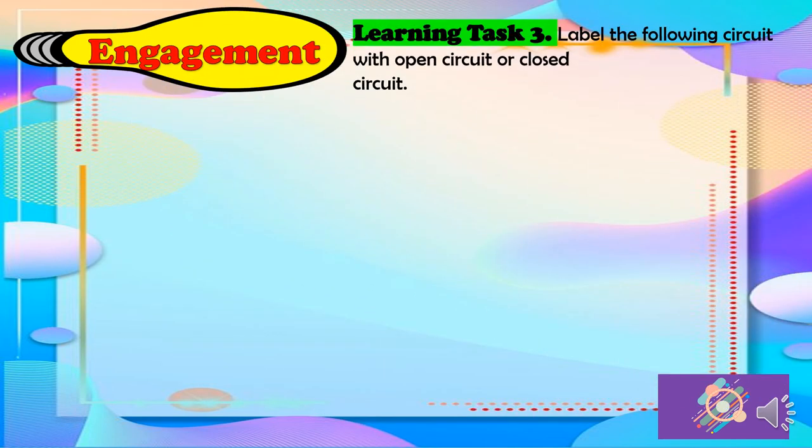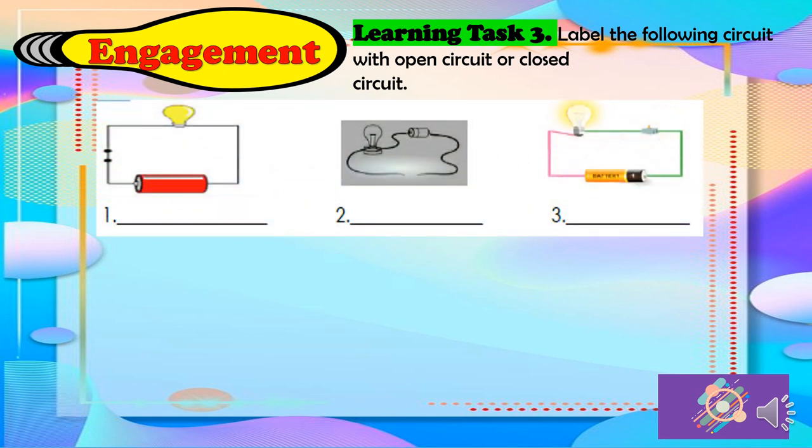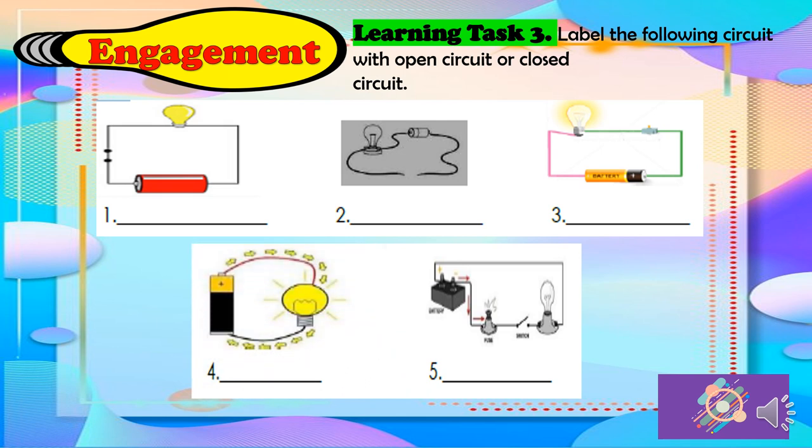For learning task 3, label the following circuit with open or closed circuit. So we have 1, 2, 3, 4, and 5.